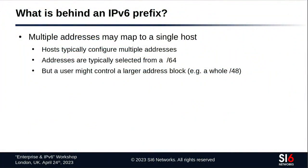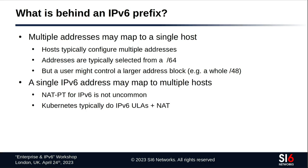One important note: multiple addresses can map to the same host. With SLAAC, a device picks addresses from a /64 and, with temporary addresses, those addresses change frequently — so the same device in the same /64 is constantly changing its address. Conversely, one address may map to multiple systems — for example, multiple hosts behind a NAT device, which is what Kubernetes does for IPv6.